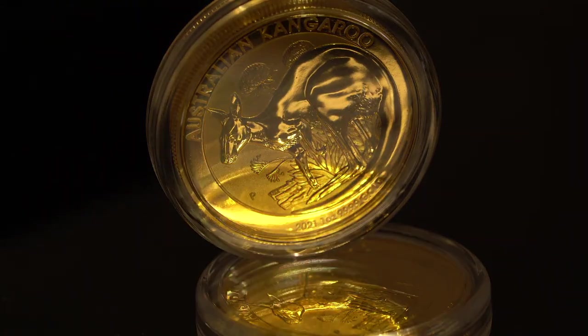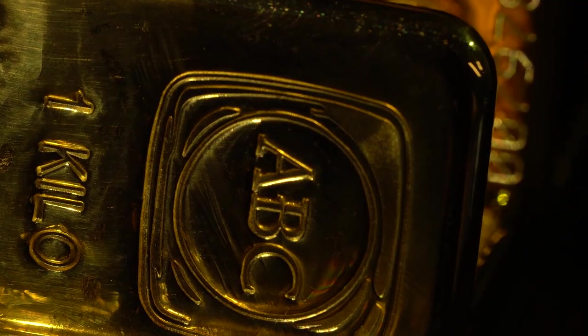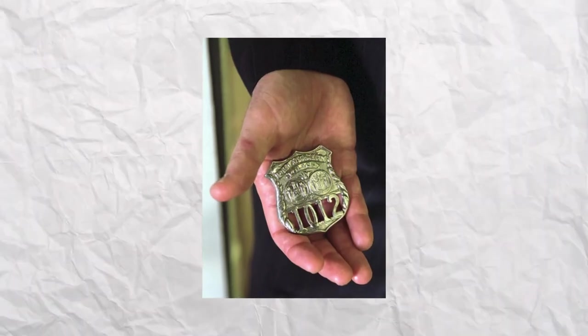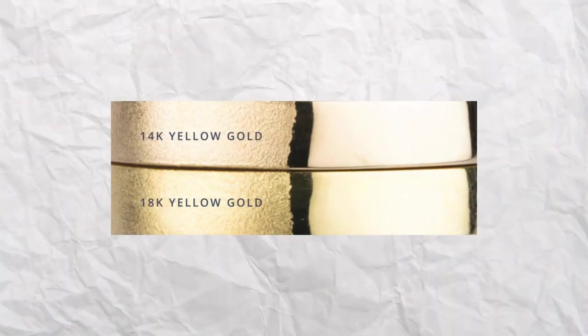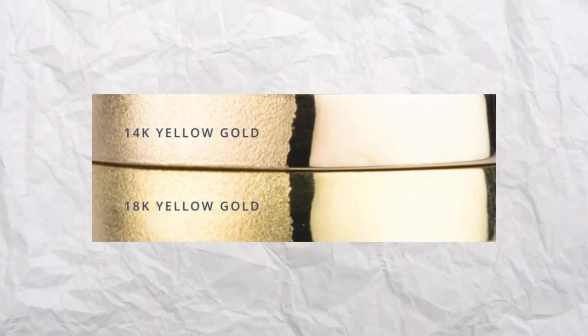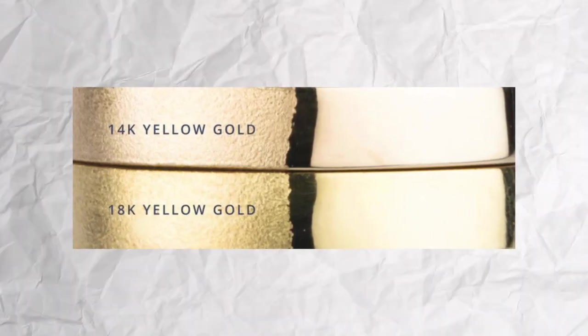14-carat gold-copper alloy is nearly identical in color to certain bronze alloys, and both may be used to produce police and other badges. 14- and 18-carat gold alloys with silver alone appear greenish-yellow and are referred to as green gold.